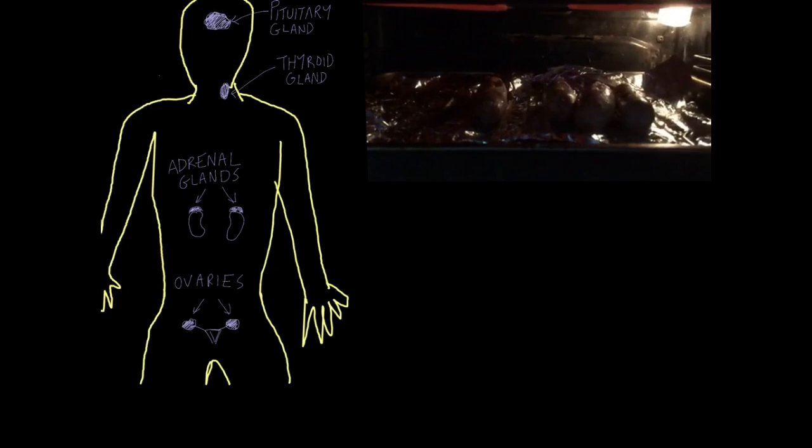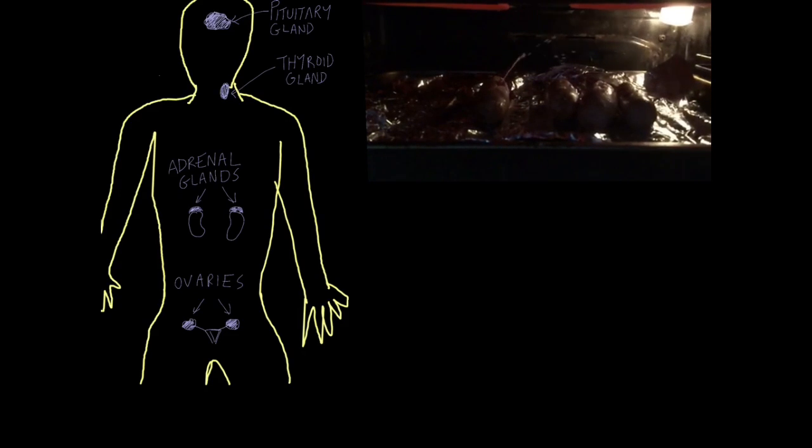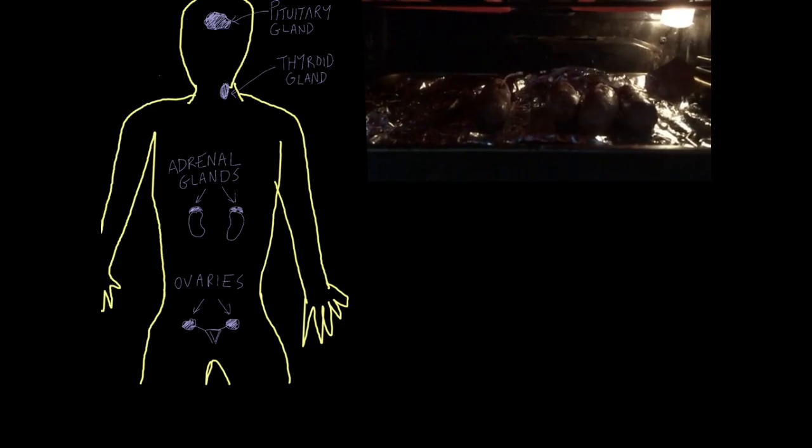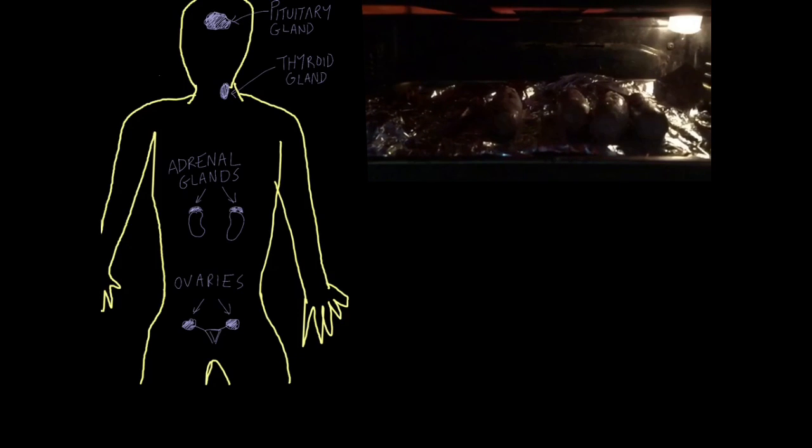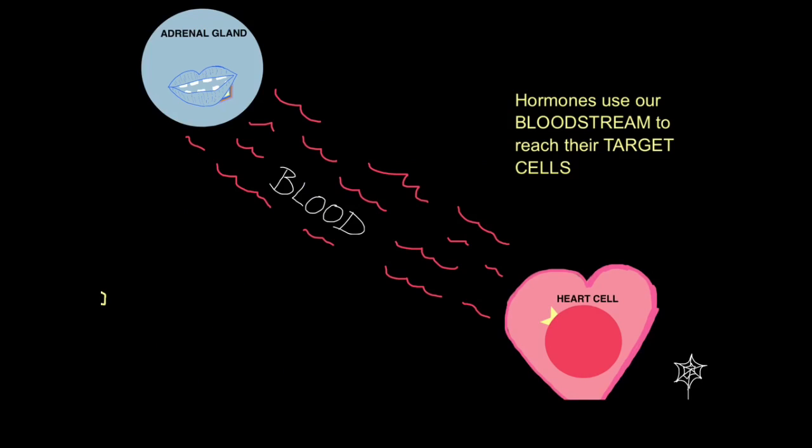So I thought this video footage would help you understand what endocrine glands do. Endocrine glands, just like the sausages secreting fat, endocrine glands will secrete hormones. To make sense of this, we're going to look at this specific example, how adrenal glands secrete adrenaline in response to a fright.